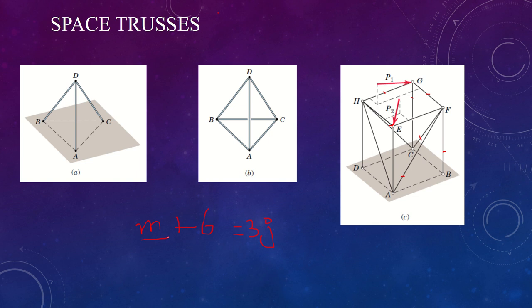A simple space truss satisfies this relation automatically. Starting with the initial tetrahedron for which the equation holds, the structure is extended by adding three members and one joint at a time, thus preserving the inequality. As in the case of the plane truss, this relation is a necessary condition for stability.